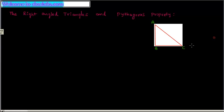Consider triangle ABC, where the angle at vertex B is 90 degrees. This triangle is called a right-angled triangle. In this right-angled triangle there are three sides: AB, BC, and CA. The side which is opposite to the right angle — that is, opposite to the 90-degree angle — is called the hypotenuse. Here, side AC is opposite to the 90-degree angle, so AC is called the hypotenuse.